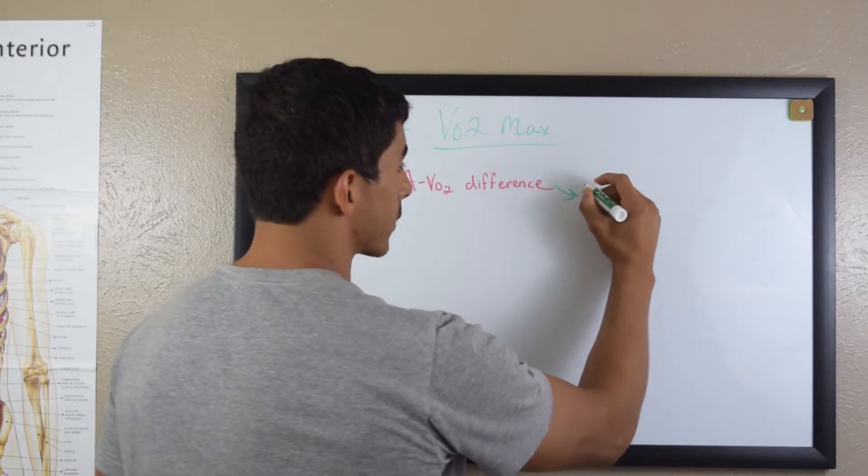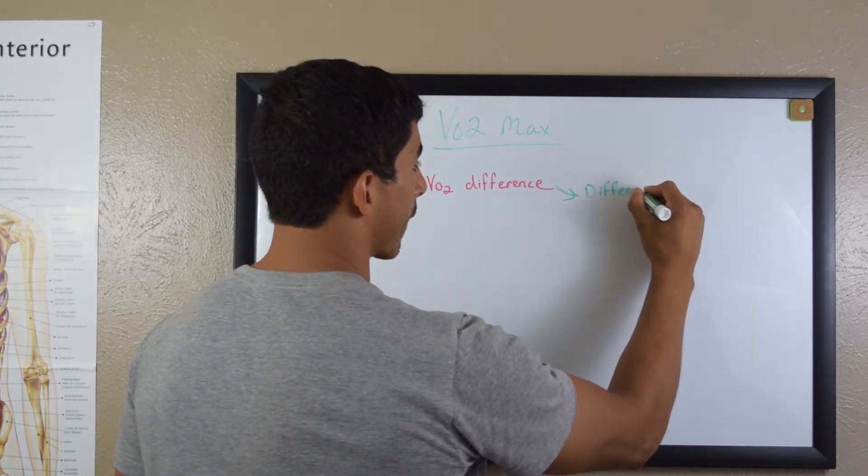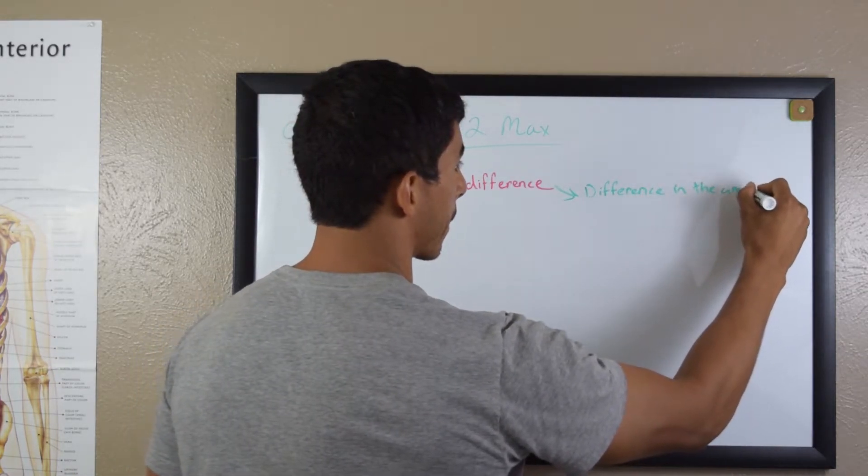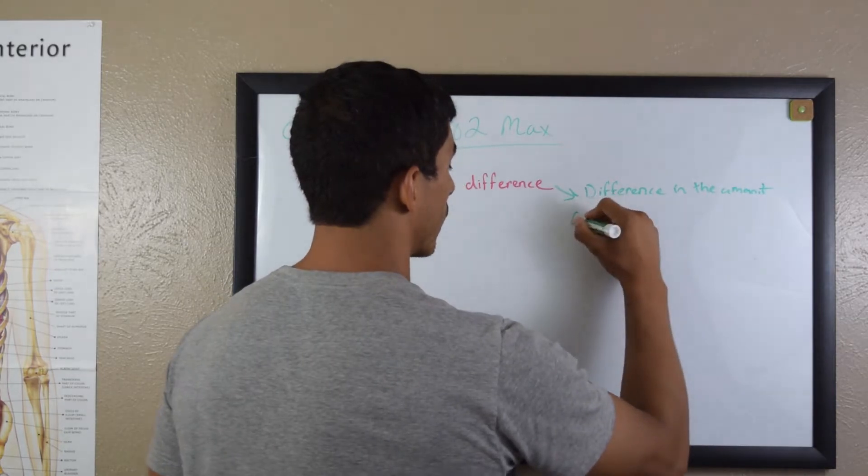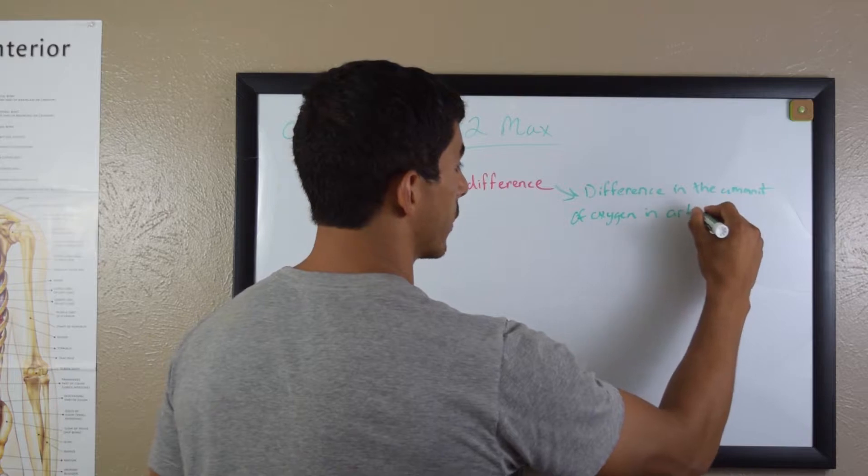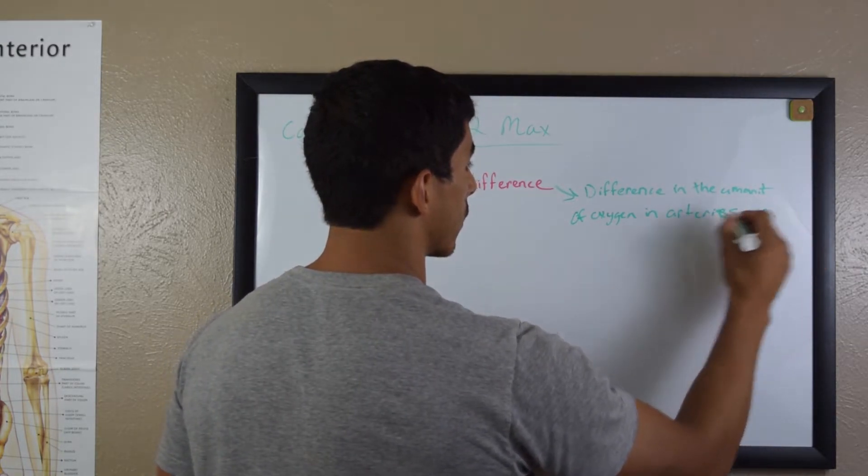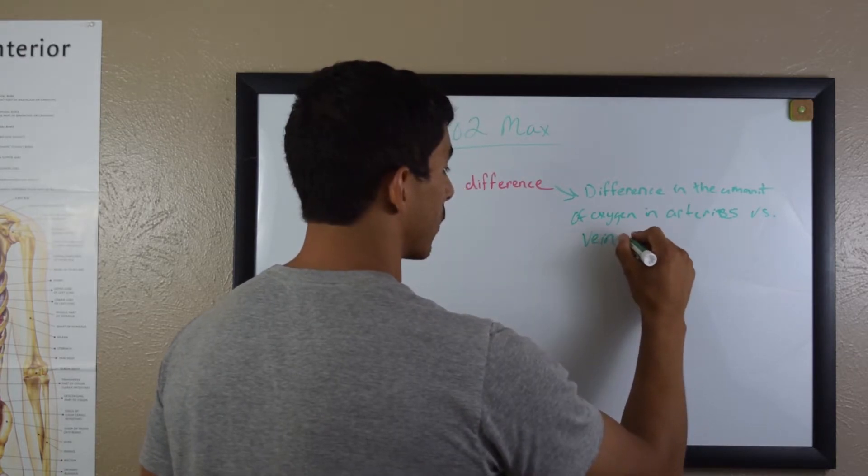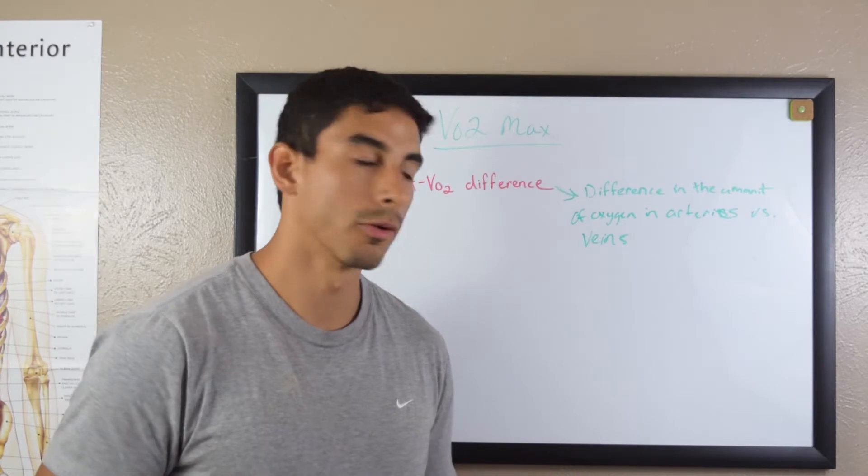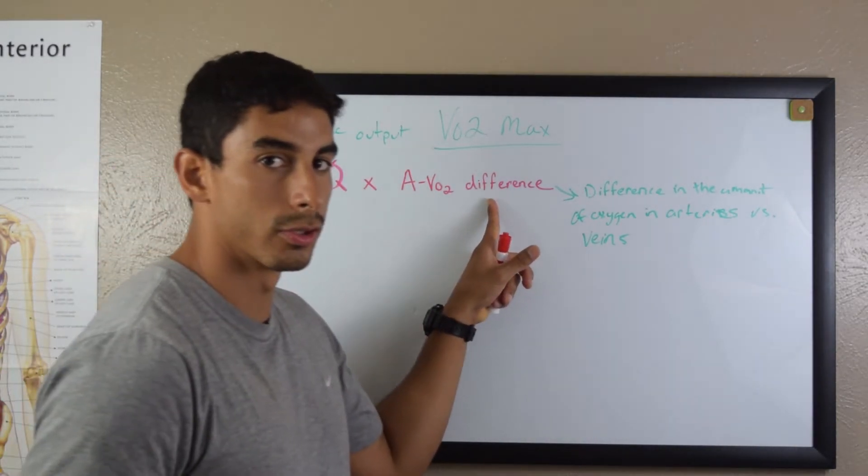So this is the difference in the amount of oxygen in arteries. Sorry for the poor handwriting, but hopefully you got the audio. So let me break this one down, and then I'll discuss AVO2 difference a little further.